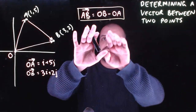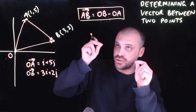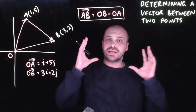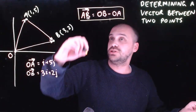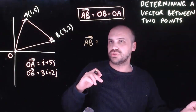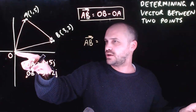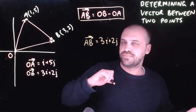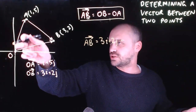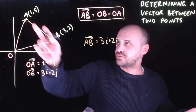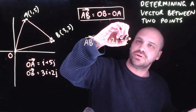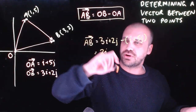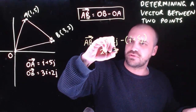This is the important formula to take away: a vector between two points equals the second point minus the first point, because those position vectors are the points themselves. So vector AB = OB − OA = (3i + 2j) − (i + 5j) = 3i − i + 2j − 5j = 2i − 3j.